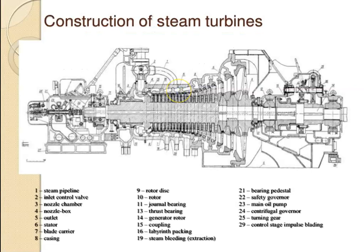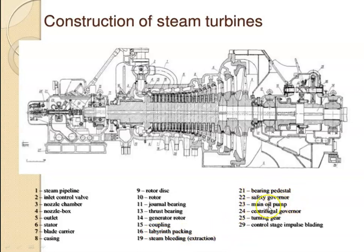Look at the diagram — this is the construction of an industrial steam turbine. The various components are: steam pipeline, inlet control valve, nozzle chamber, nozzle box, outlet, stator, blade carrier, casing, rotor disc, rotor, journal bearing, thrust bearing, generator rotor, coupling, labyrinth packing, steam bleeding extraction point, bearing pedestal, safety governor, main oil pump, centrifugal governor, turning gear, and control stage impulse bleeding.